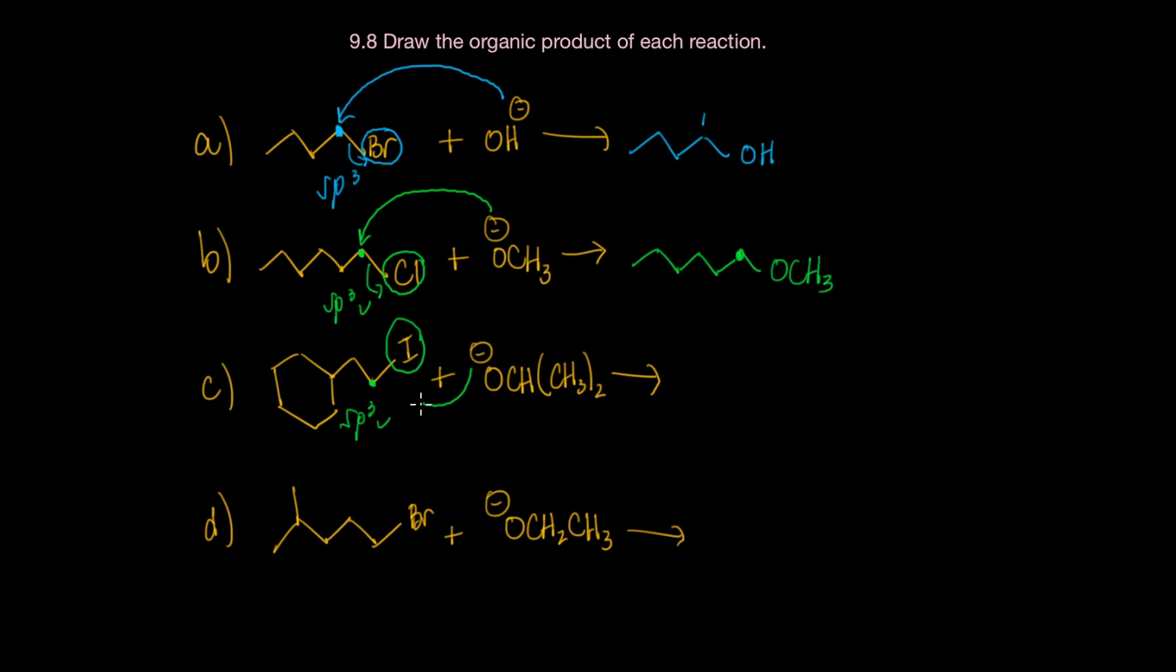This negative charge now can go ahead and attack that carbon, kick off the leaving group here. And what you're going to form as a result is the same organic number of carbons here. I just put my dot there to orientate us, and attached to that dot, we're going to have OCH(CH3)2. So we're going to draw it as a stick figure so you can practice reading this kind of condensed molecular notation and draw out the isopropyl group.